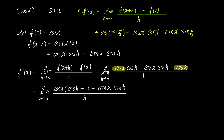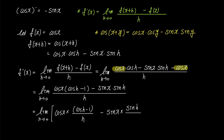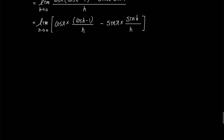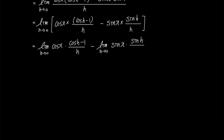Now let's express the expression as two fractions. As h approaches 0, the limit of cosine x times the quantity cosine h minus 1 over h, minus sine x times sine h over h, can be obtained. Expanding the limit and eliminating the square brackets, we have the limit of cosine x times cosine h minus 1 over h, minus the limit of sine x times sine h over h.